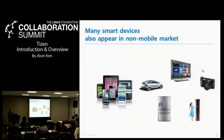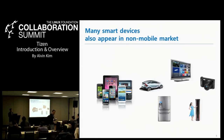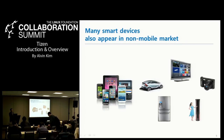Many smart devices also appear in the non-mobile market as well as the mobile market. We frequently hear about smart devices like smart cars, smart TVs, smart cameras, or even refrigerators, for example.